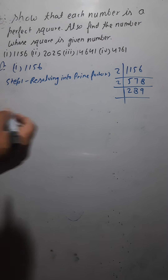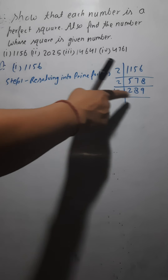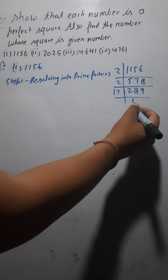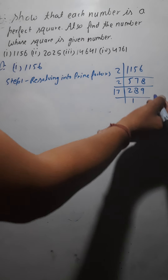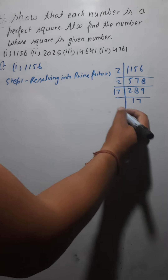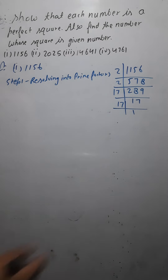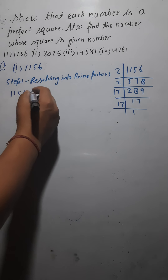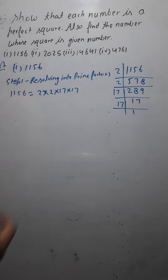Now 289 is divisible by 17 only. Dividing 289 by 17 gives 17. And 17 is again divisible by 17 only. So if you resolve 1156 into prime factors, you get 2 × 2 × 17 × 17.